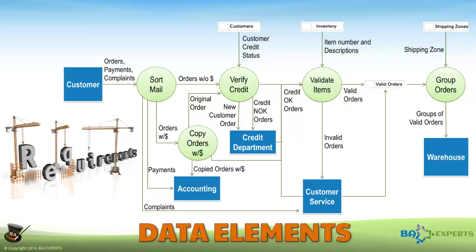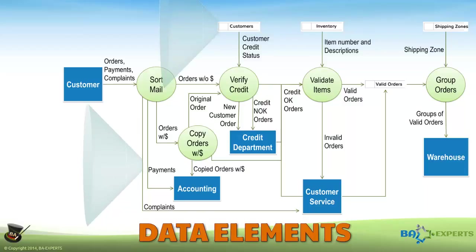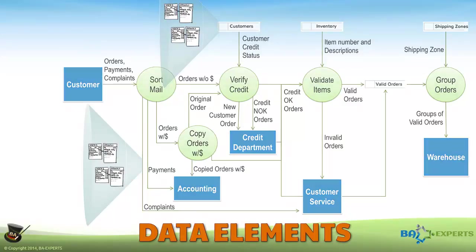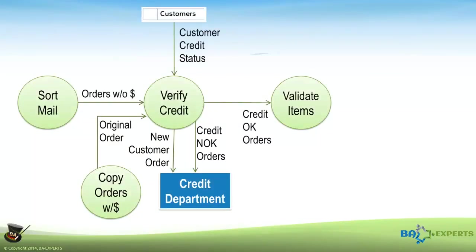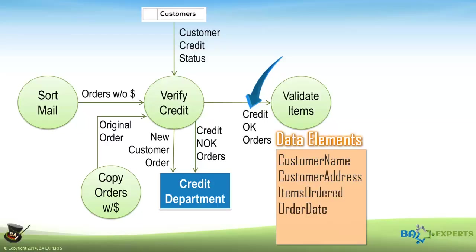To be able to isolate data issues and to define the requirements for how a future application can avoid them, you need to know the data elements. You could consider this the equivalent of exploding a process. If you explode a data flow or data store to its lowest level of detail, you find a bunch of data elements. For example, the data flow "Credit OK Order" contains all of the data elements describing the order — customer name and address, items ordered, order date, etc. — and some indicator that this customer has good credit.